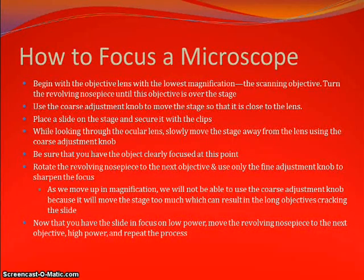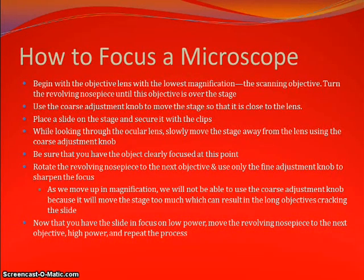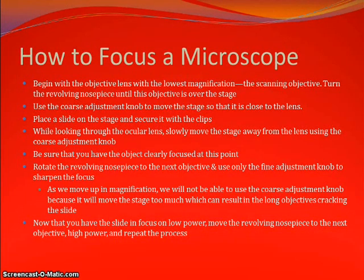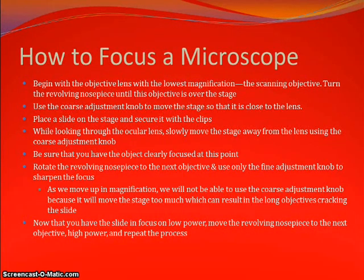We used the fine adjustment knob because as we move up in magnification, we can't use the coarse adjustment knob — it would move the stage too much, which can result in the long objective lens cracking the slide. The fine adjustment knob moves the stage at a much smaller rate to get the precise image we want. Once focused on the low power objective lens, we turned the revolving nosepiece to the high power objective lens and observed from there.